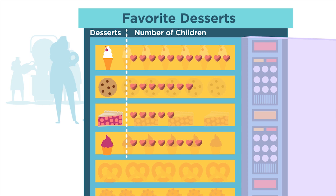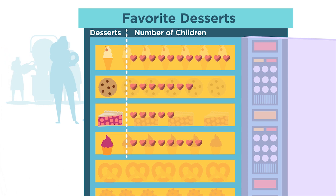Look at the pictograph. Can you tell which dessert the people like the most? To answer this question, you must find the row with the most hearts. Ice cream has more hearts than any other row, so ice cream was chosen the most by the people who were surveyed.